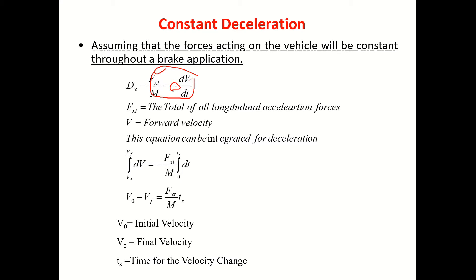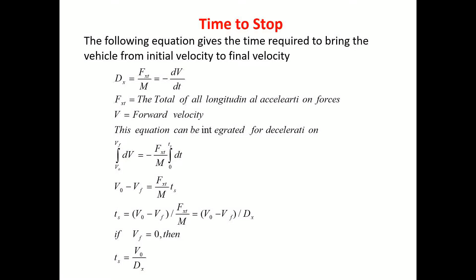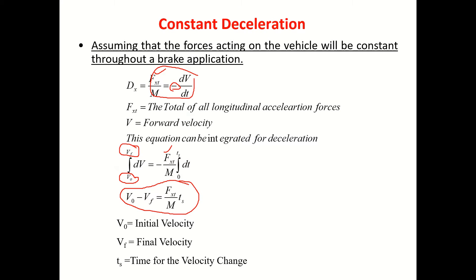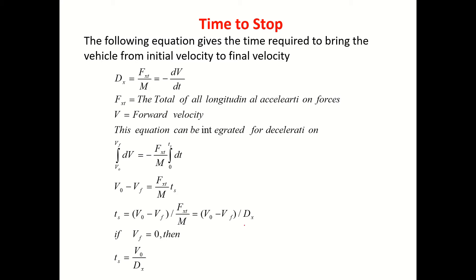Cross-multiplying, we keep dv on one side. Initially the vehicle is at velocity v-naught and vf is the final velocity. The deceleration rate is taken out; v-naught is the velocity at time zero and vf is the velocity after time ts. By integrating, we get: v-naught minus vf divided by (F_xt / m) equals ts. From that previous equation we can find out ts.